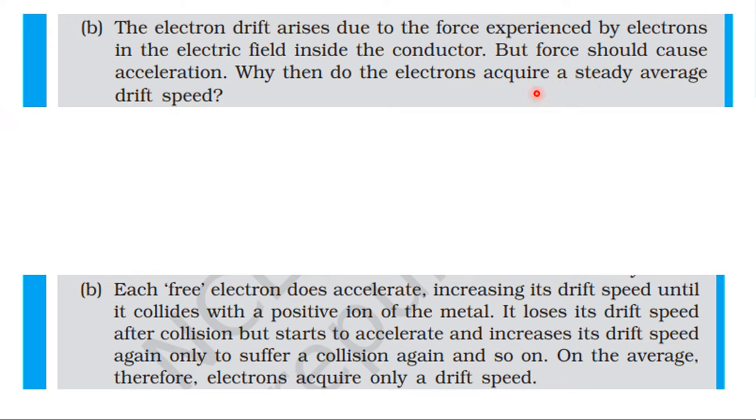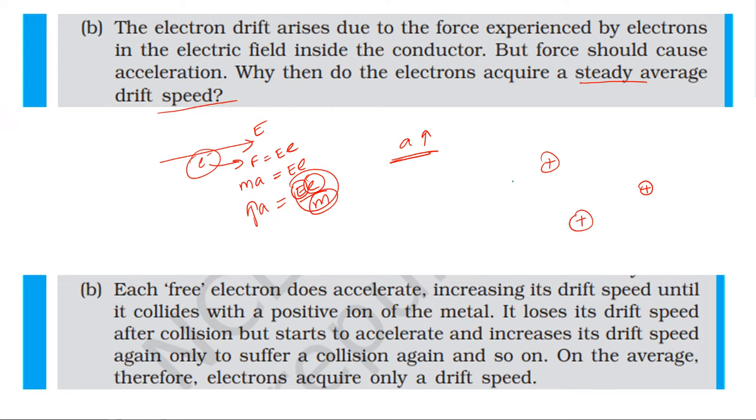Each free electron does accelerate, increasing its drift speed until it collides with a positive ion of the metal. It loses its drift speed after collision but starts to accelerate and increase its drift speed again, only to suffer a collision again and so on. On average, therefore, electrons acquire only a steady drift speed. The constant acceleration is not maintained because electrons collide with atoms. Between collisions, velocity increases and decreases. On average, a certain steady drift velocity is maintained.